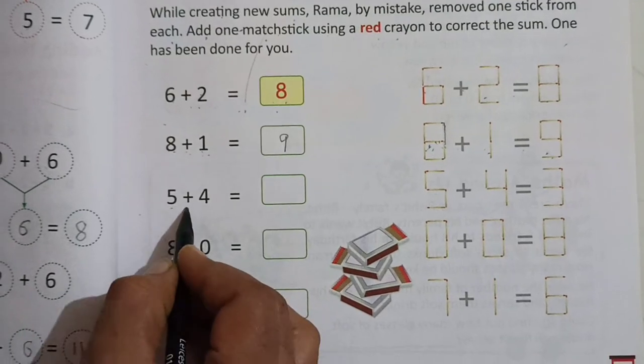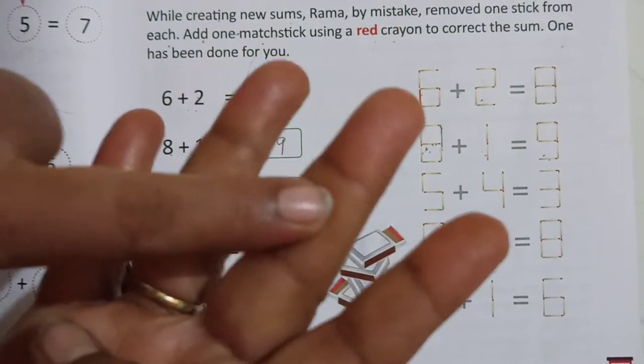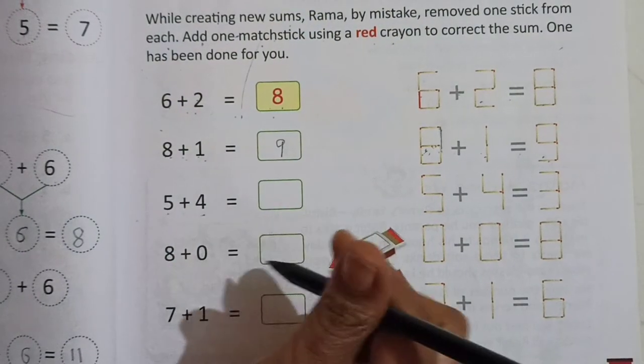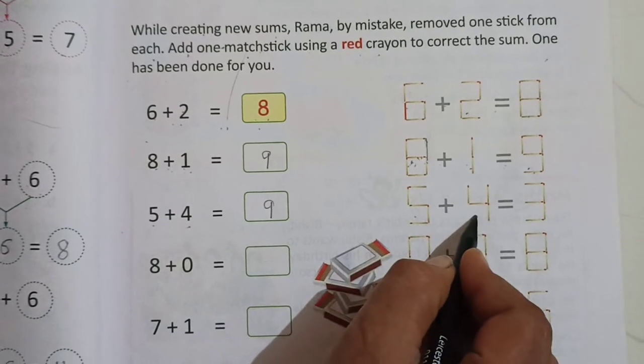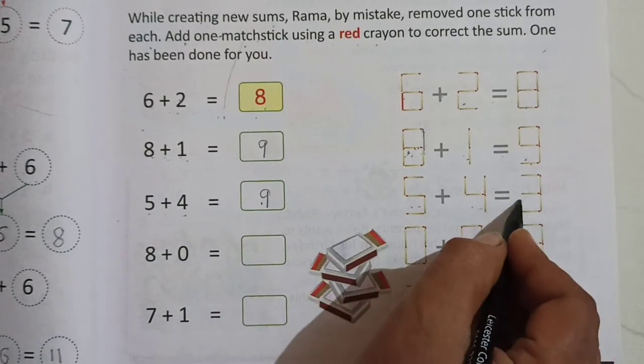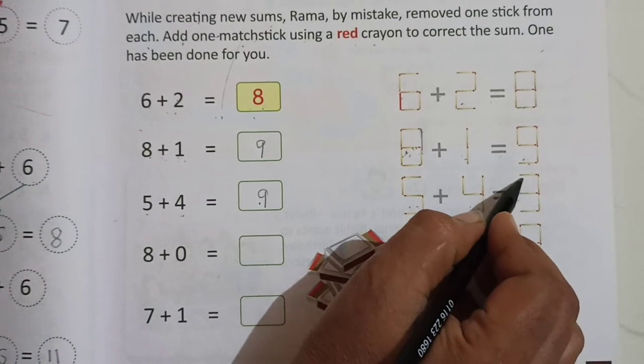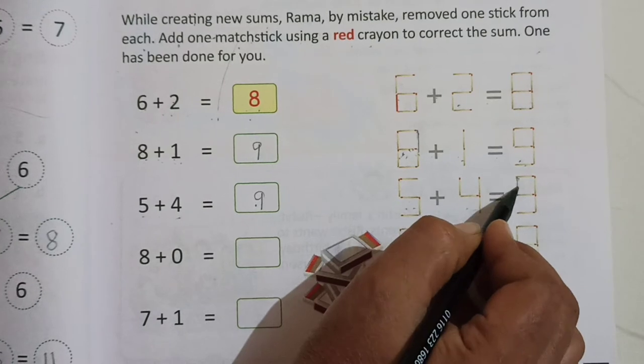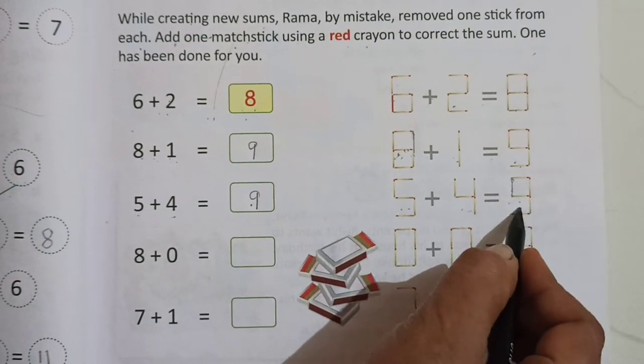Now here 5 plus 4. After 5: 6, 7, 8, 9. So 9 here. Now here 5 plus 4, 5 and 4 is correct. But we have to make here 9. So children, you have to use here red crayon. When we add this line or draw this line, it becomes 9.